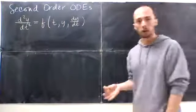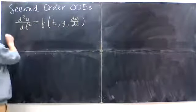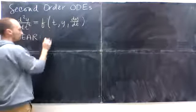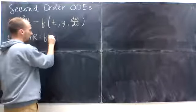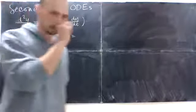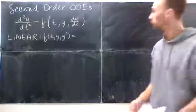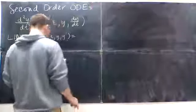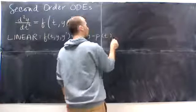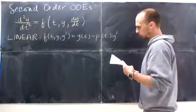Now, a linear second-order differential equation would be where this f of t, y, and y prime is going to be given by g(t) minus p(t) dy/dt minus q(t)y.